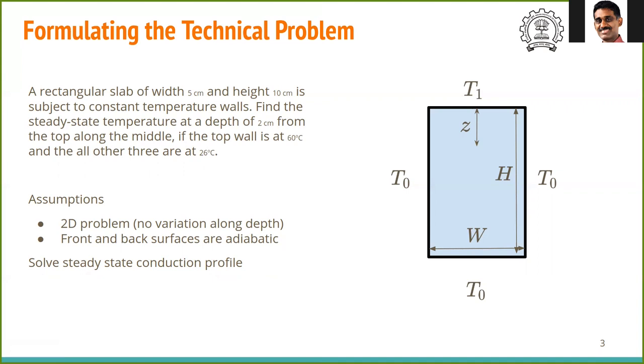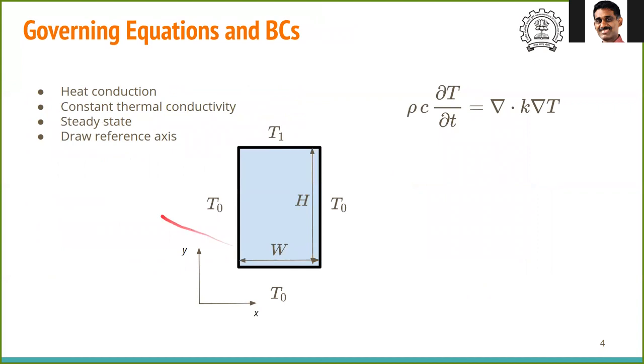Let us first formulate the model. That is identify the governing equations and boundary conditions. Since there is only conduction, we have the equation for steady state conduction, which is ρC ∂T/∂t = ∇·(k∇T). Here ρ is the mass density of the slab material, C is the specific heat and k is the thermal conductivity.